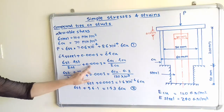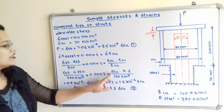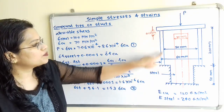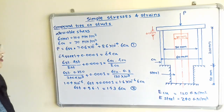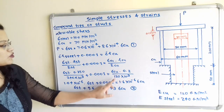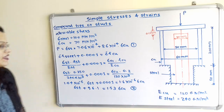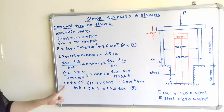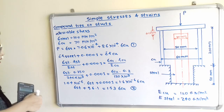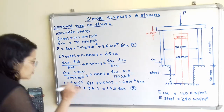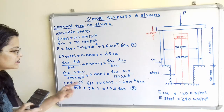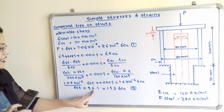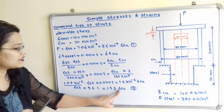Substituting into the strain equation: sigma_steel × 0.250 / (240 × 10³) + 0.0001 = sigma_copper × 0.200 / (120 × 10³), where the copper tube length is 200 mm = 0.2 m. The coefficient of sigma_steel is 1.04 × 10⁻⁶. Dividing through gives the simplified equation: sigma_steel + 96.1 = 1.53 × sigma_copper, which is equation number 2.